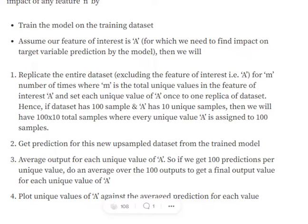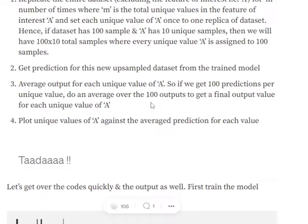Now, for each replica set that we have created—so we have replicated the dataset 10 times, right—for each replica we will be assigning one unique value to the entire replica. So the first replica will have the first unique value of A, the second replica will have the second unique value of A. One by one, all the unique values are getting assigned to the entire dataset.